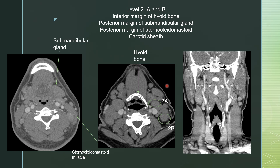For level 2 lymph nodes, you have to know the hyoid bone, the submandibular gland, the carotid sheath, and the sternocleidomastoid muscle. Level 2A lymph nodes are between the posterior border of the submandibular gland and the carotid sheath. Level 2B lymph nodes are behind the carotid sheath and before you get to the posterior border of the sternocleidomastoid muscle. They should be above the level of the hyoid bone. Here are 2A and 2B in the coronal view.